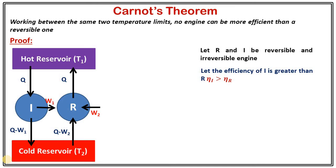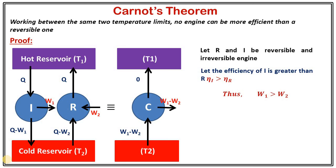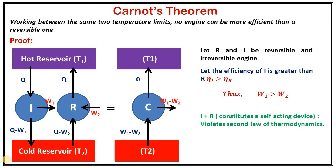The reversible engine operates at the same temperatures, extracting Q minus W2 amount of heat from the cold reservoir. Now, let's assume the efficiency of the irreversible engine is greater than that of the reversible one, which means W1 should be greater than W2. If you combine these two engines I and R, it will constitute a self-acting device extracting W1 minus W2 amount of heat from the cold reservoir and delivering W1 minus W2 amount of work with no heat rejection.